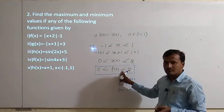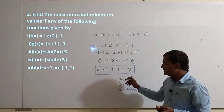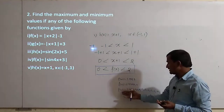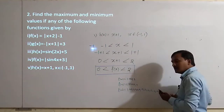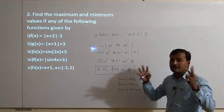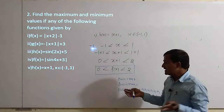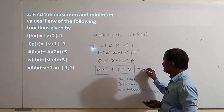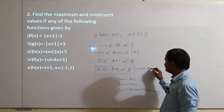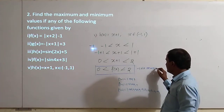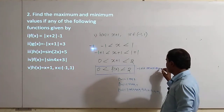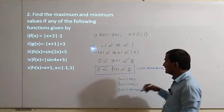It means that we are not getting a finite value. If it were finite, the maximum would be that finite value only. But here, due to the open interval, we do not have any finite values. Hence, this function has no maximum.